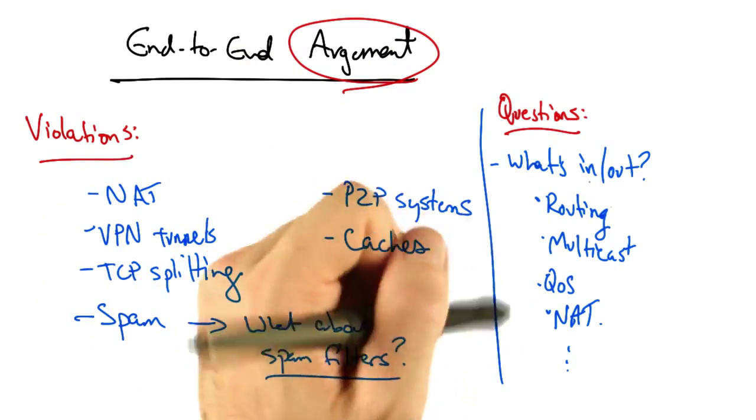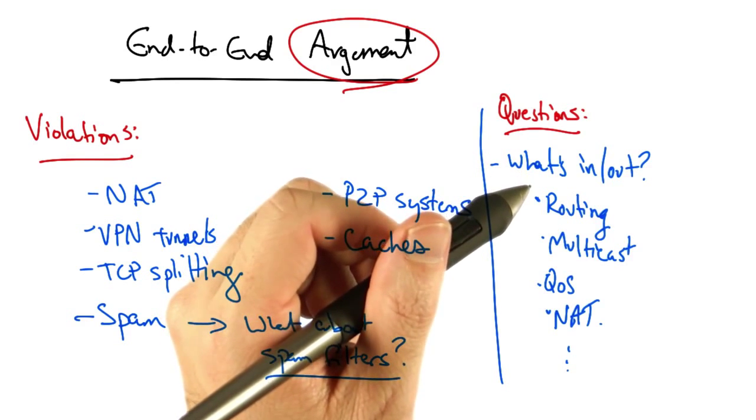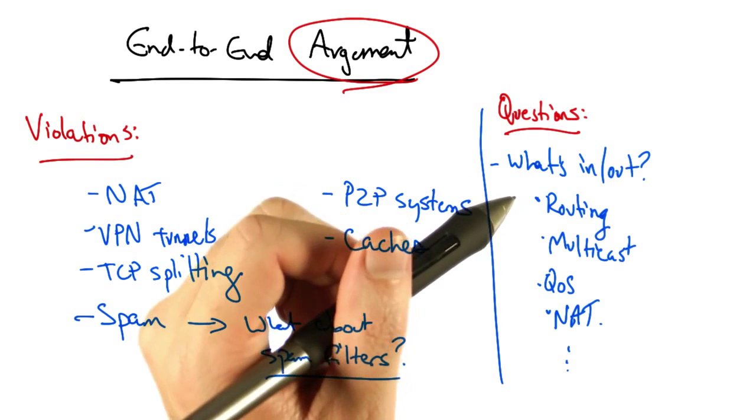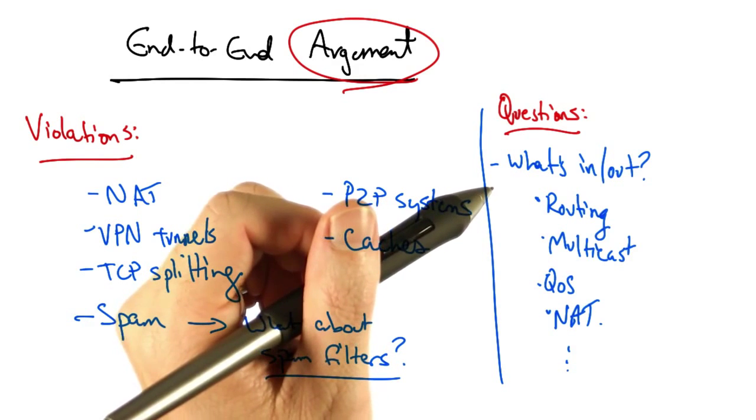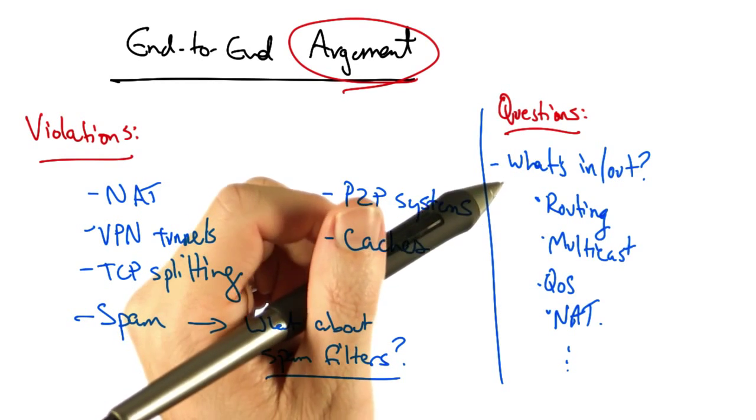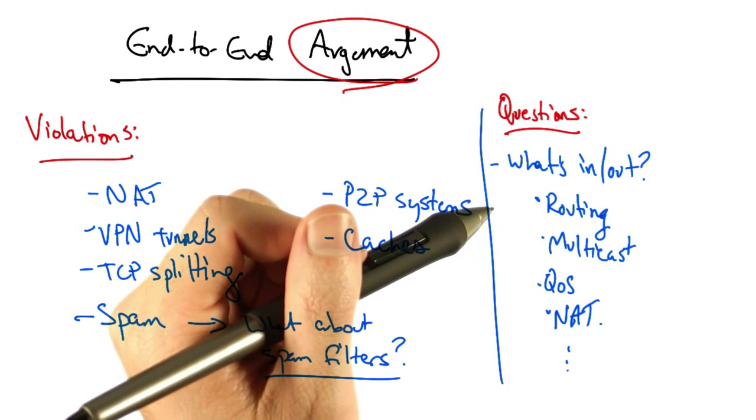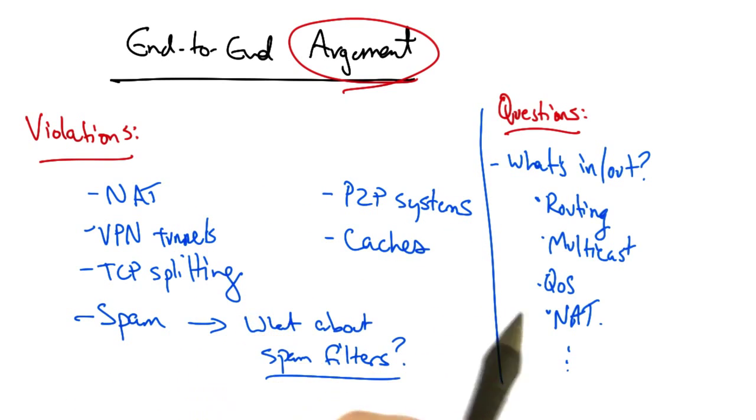And it's worth considering whether the end-to-end argument is constraining innovation of the infrastructure by preventing us from putting some of the more interesting or helpful functions inside the network. In the third course, we'll talk about software-defined networking, which in some sense reverses many aspects of this end-to-end argument.